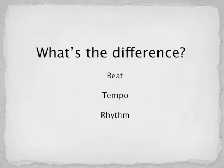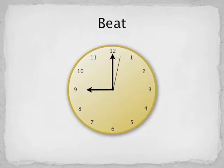What is the difference between a beat, a tempo, and a rhythm? A beat is the steady and basic pulse in time. Think of a clock with a second hand. Each tick of the second hand is a beat. In one minute, there are 60 beats.